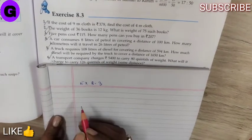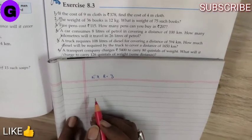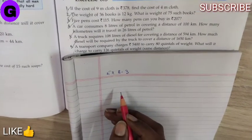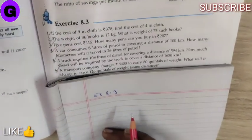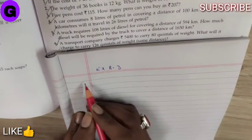Now Unitary Method, it is a process in which we find the value of 1 and then we evaluate whatever they have asked for. For instance,